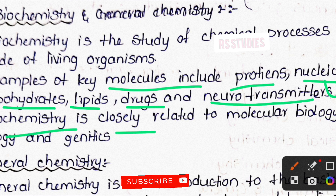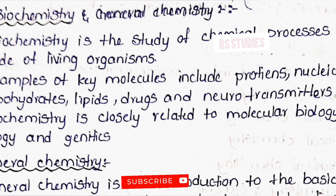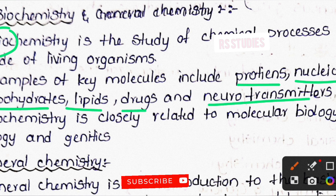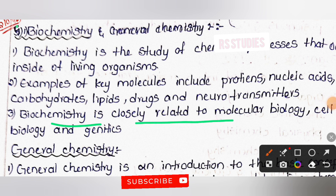Biochemistry is the study of chemical biology, cell biology, and genetics. Bio means biology, so biochemistry is biology plus chemistry. It is closely related to cell biology and genetics, and is based on proteins, nucleic acids, carbohydrates, lipids, and neurotransmitters.